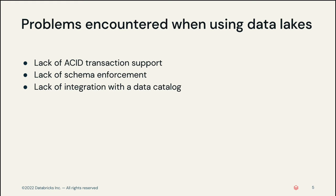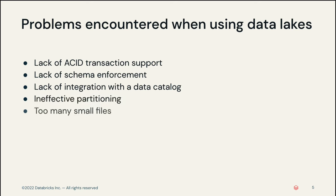These can bring the reliability of available data in a data lake into question. As for performance, using object storage means data is mostly kept in immutable files, leading to issues such as ineffective partitioning and having too many small files. Partitioning is sometimes used as a poor man's indexing practice by data engineers, leading to hundreds of dev hours lost tuning file sizes to improve performance. Partitioning tends to be ineffective if the wrong field was selected, or due to high cardinality columns.